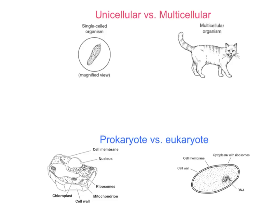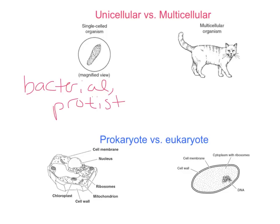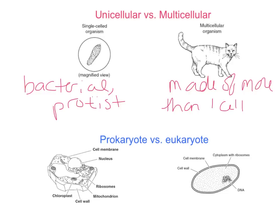Some kingdoms are classified as unicellular or multicellular organisms. Unicellular organisms can be found in both bacterial kingdoms as well as in protists and one fungus — yeast is the only fungus that is unicellular. Multicellular organisms are made of more than one cell; examples include plants, animals, and most fungi.